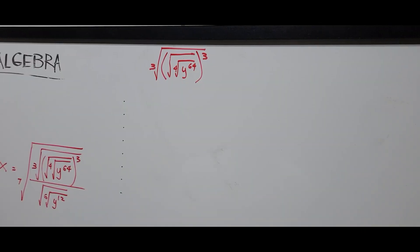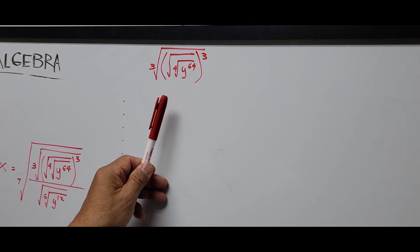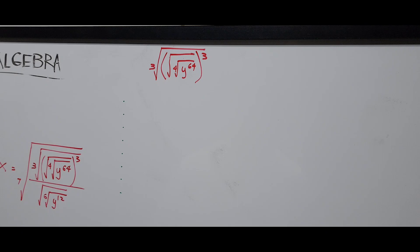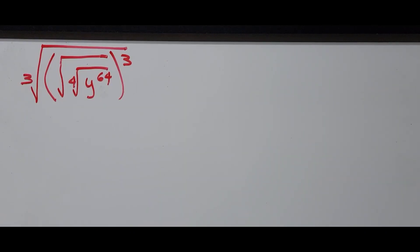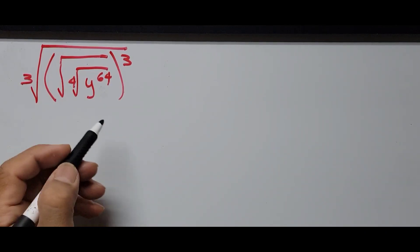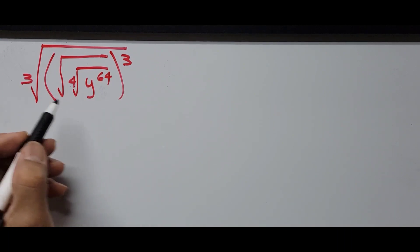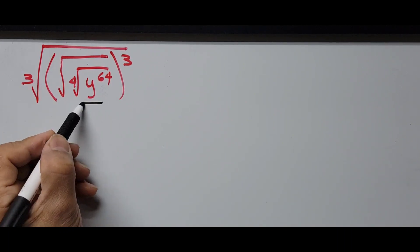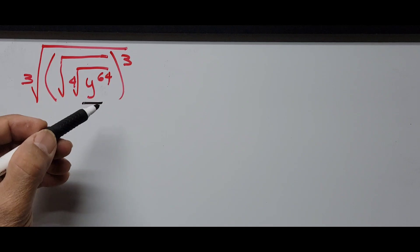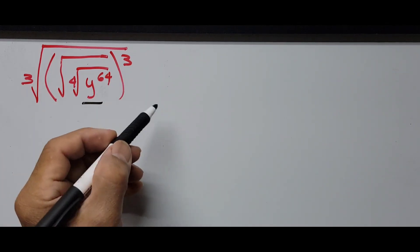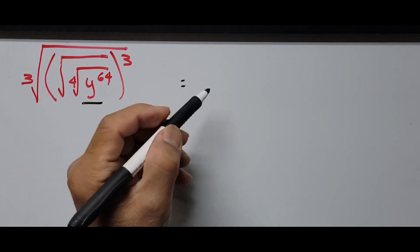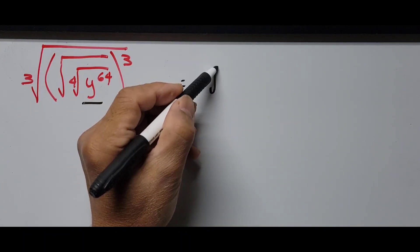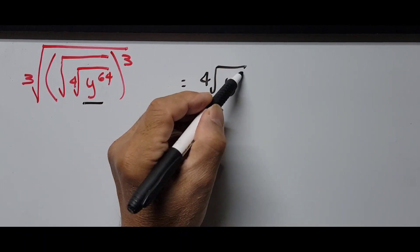Since this equation is really complex, I have to rewrite the numerator again over here so we can start focusing on the numerator first, so we can simplify. Let's start simplifying that numerator. First thing to do is get the inner radical in there, that is y squared raised to the 64th — the fourth root of y to the 64th power.